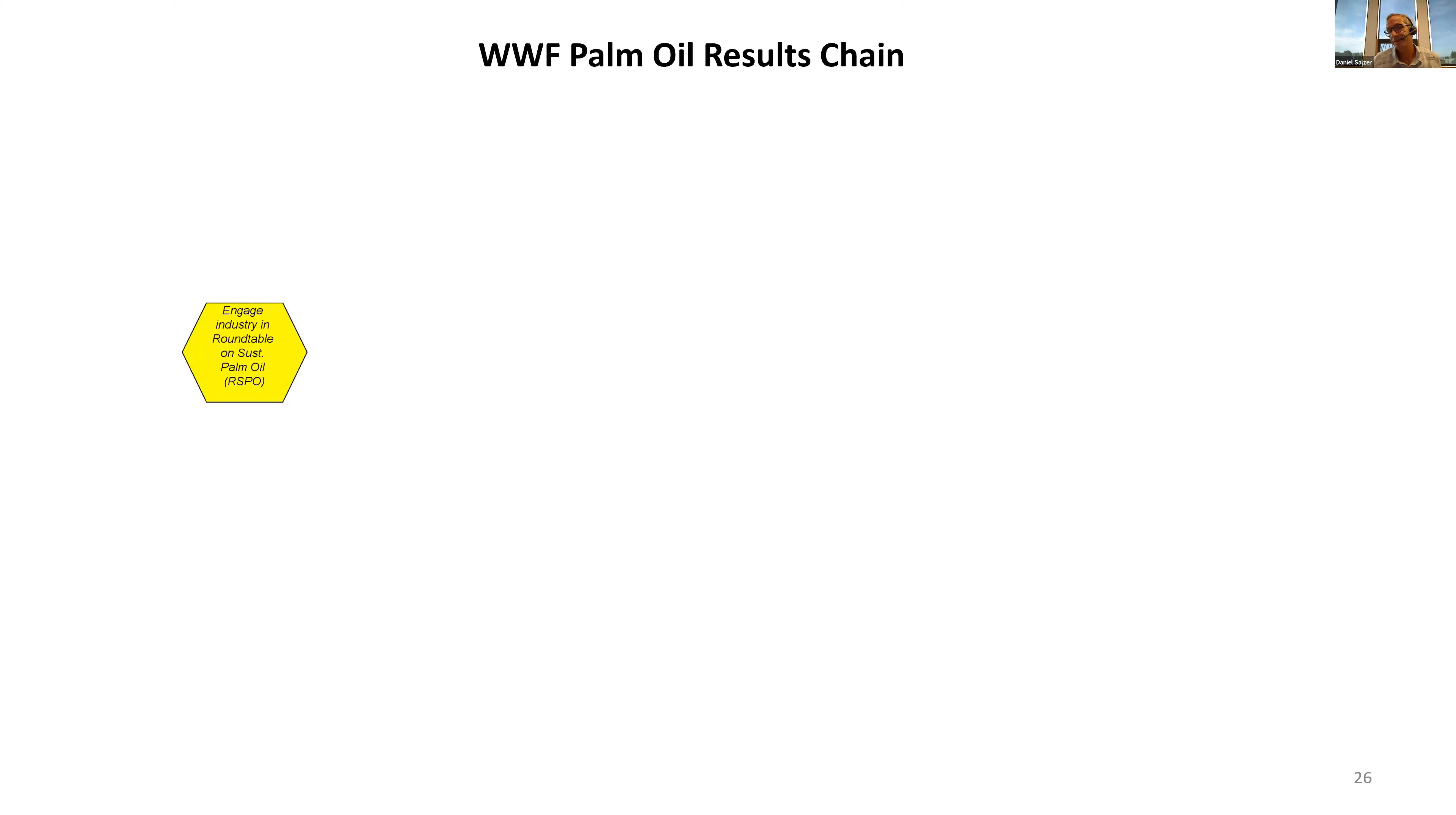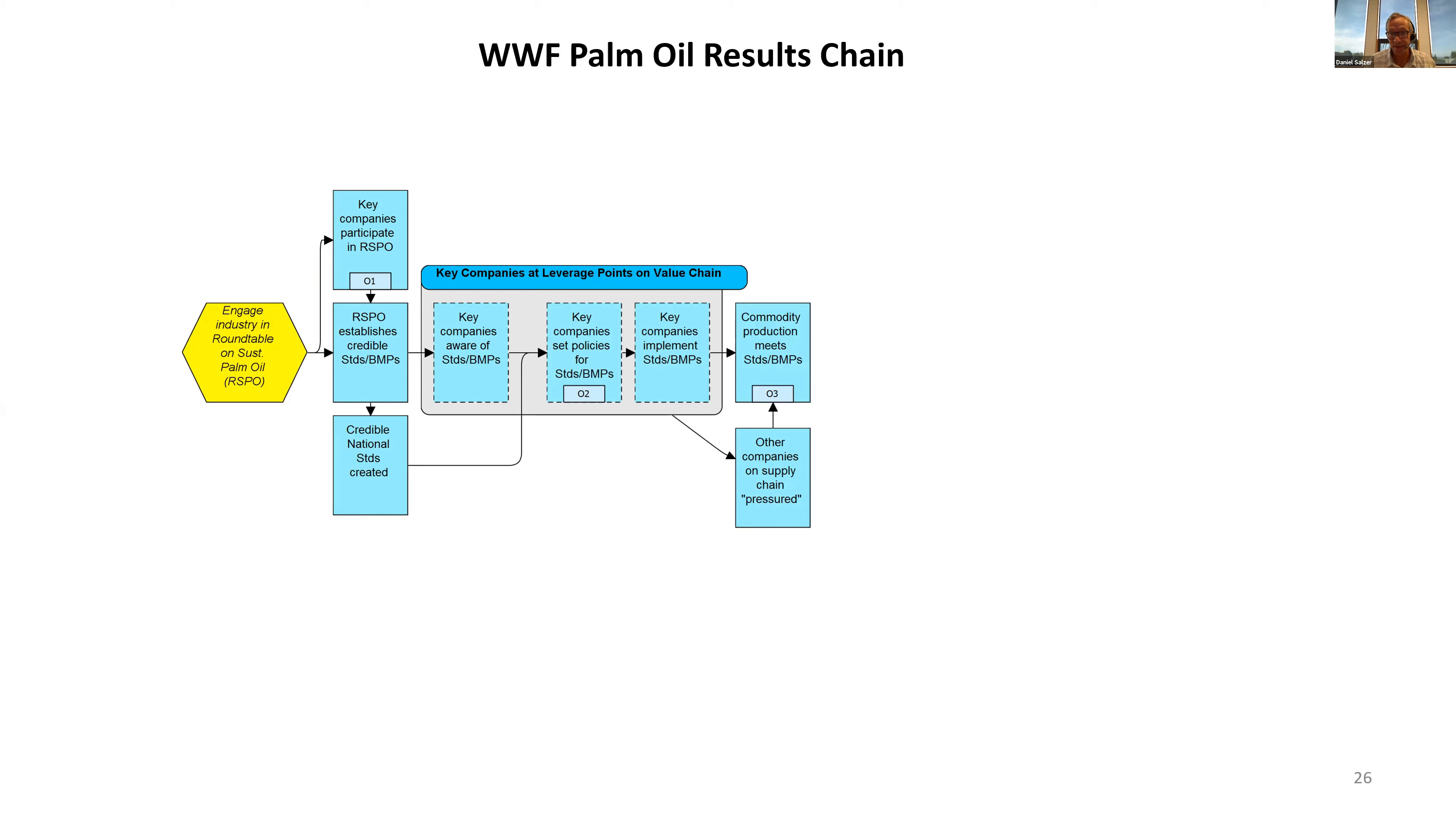This example is more similar in theme to many of the global and regional priority strategies TNC is implementing. This lays out a results chain for a sustainable palm oil industry that halts the conversion of high conservation value forests. You can see a logical sequence of establishing standards, making companies aware and setting policies that lead to implementation.